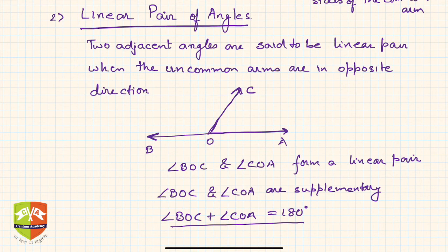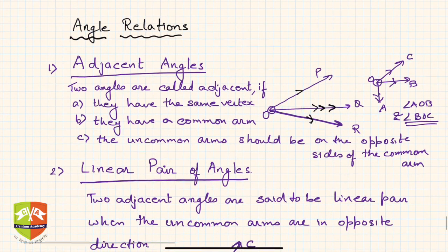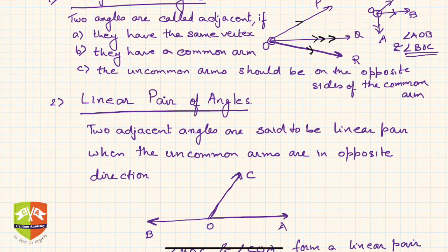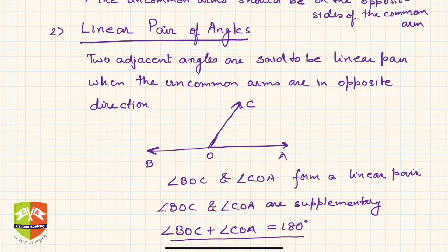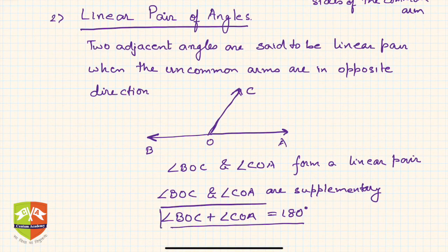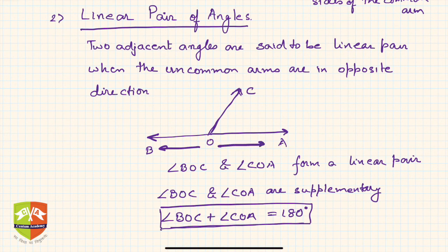So we learned two things: what adjacent angles are and what a linear pair of angles is. In the next session, we will prove that the sum of two angles in a linear pair is always 180 degrees, and vice versa — if the sum is 180 degrees, then OB and OA are in exactly opposite directions.